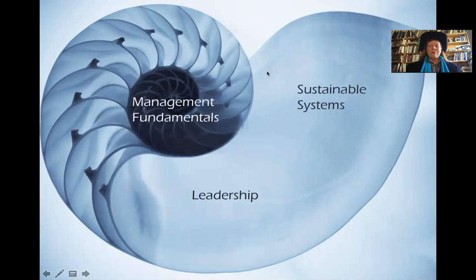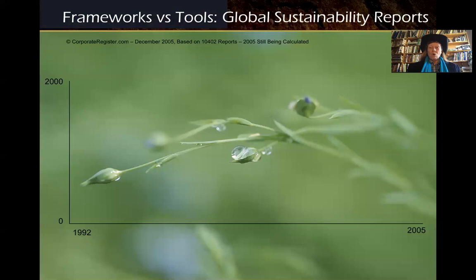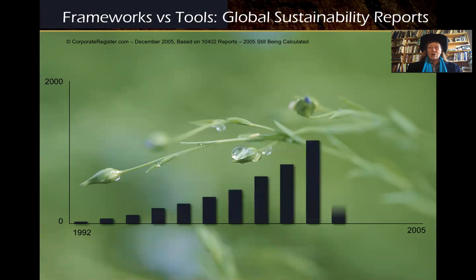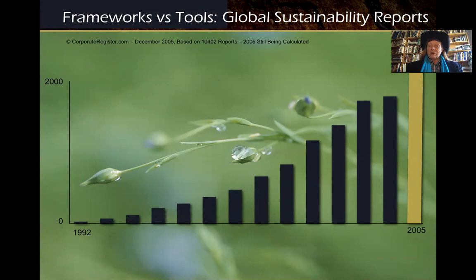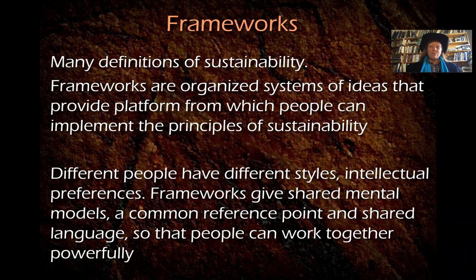In sustainability, you have the management fundamentals, you have leadership, and then you have sustainable systems. These systems differ from tools. Tools are, for example, corporate sustainability reports or life cycle assessments, and these things are happening more and more. They went from essentially unheard of in the early 90s to now essentially every big company on Earth issues one. Frameworks are organized systems of ideas that give you a platform upon which you can implement the principles of sustainability or the principles of behaving in ways that are more regenerative.